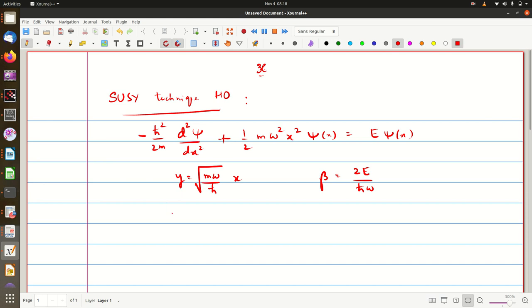We can see that this introduction will make d psi by dx equal to d psi by dy into dy by dx. So dy by dx will give you this factor root m omega by h cross times d psi by dy.